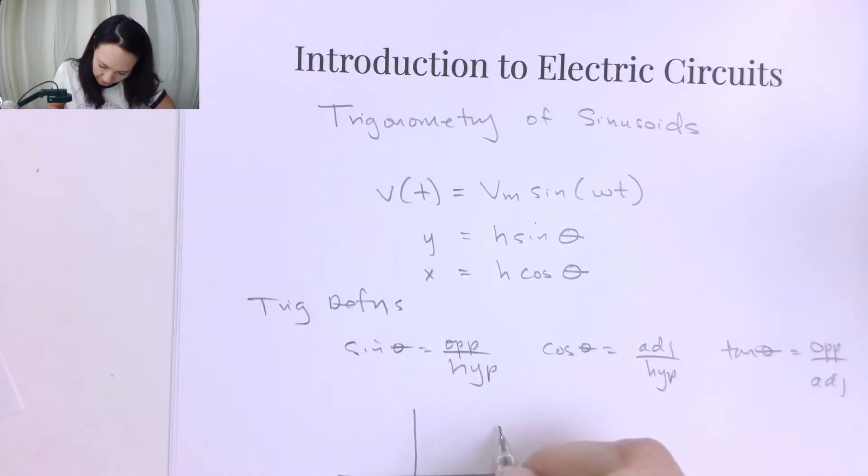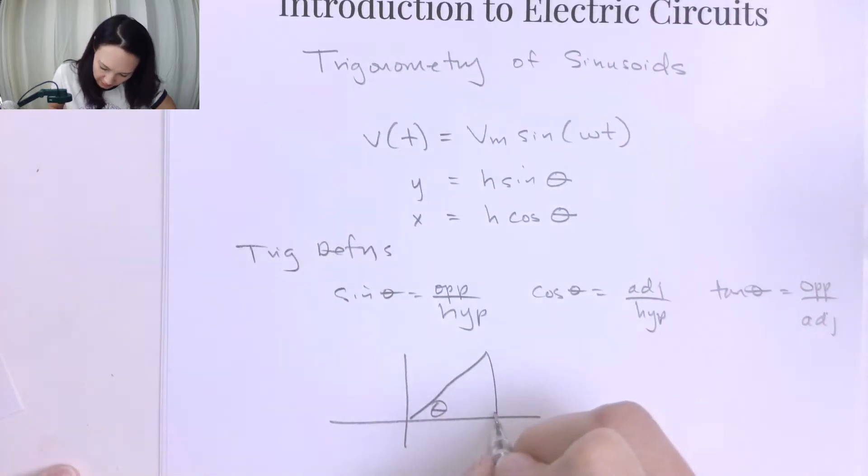So if we have this triangle, this is our theta, and this is our hypotenuse of the triangle. Relative to theta, the opposite side is this one, and relative to theta, the adjacent side is this one.